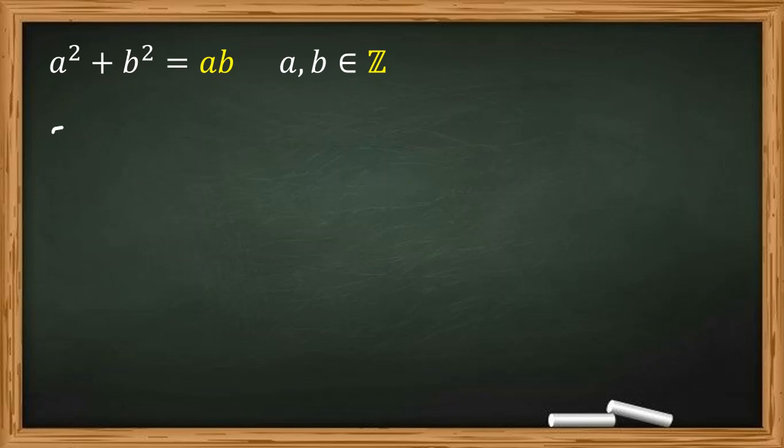Here we can do something. We can multiply both sides by 2. It will be 2a² + 2b² = 2ab.